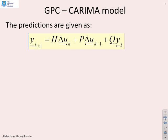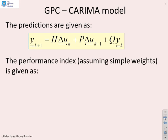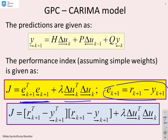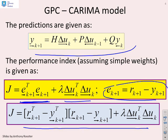The predictions are given by a form covered in chapter one. The performance index, assuming simple weights, includes the sum of tracking errors squared and the sum of control increments. The error is E = R minus Y. Putting these together, the performance index takes the form: (R_future minus Y_future) transposed times (R_future minus Y_future), plus lambda times delta_U_future transposed times delta_U_future. Those are our J and our prediction vectors.